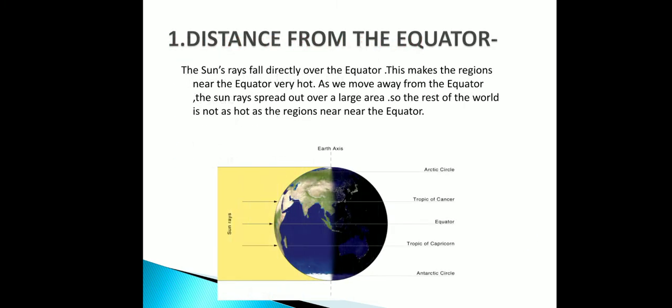The first factor is distance from the equator. The sun's rays fall directly over the equator, making regions near the equator very hot. As we move away from the equator, the sun's rays spread out over a large area, so the rest of the world is not as hot as the regions near the equator.